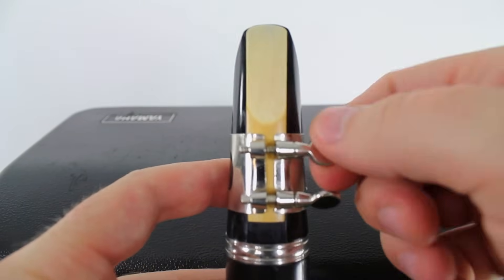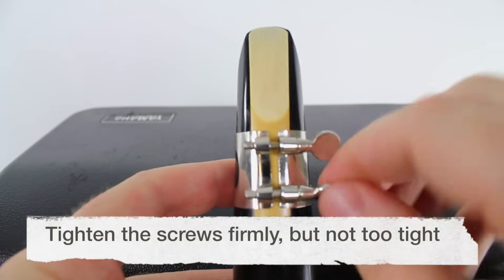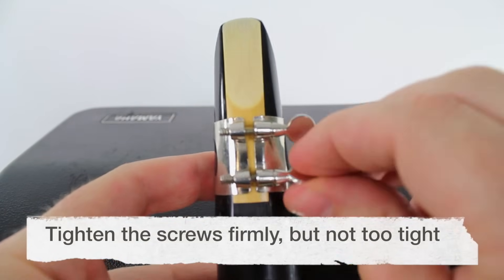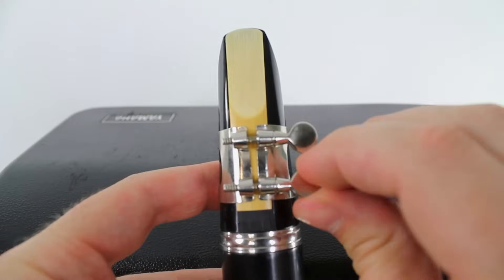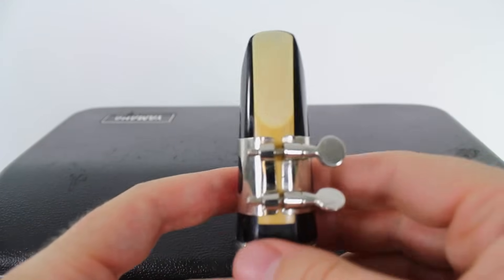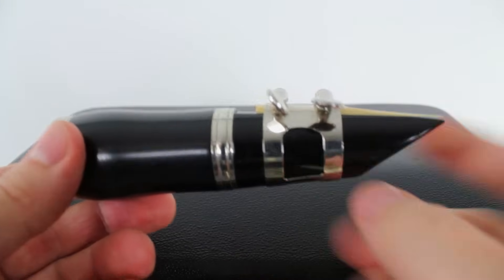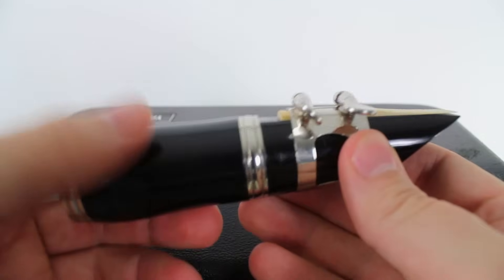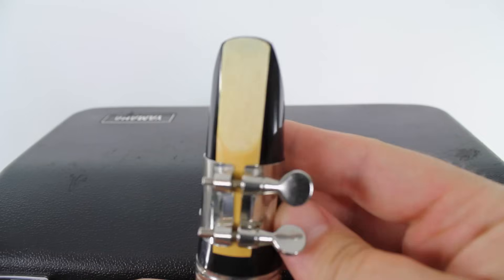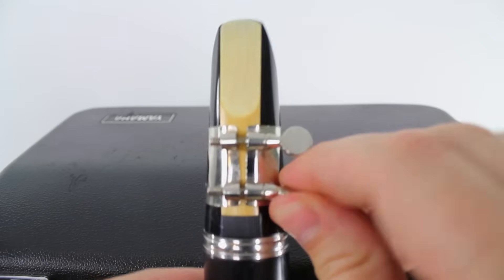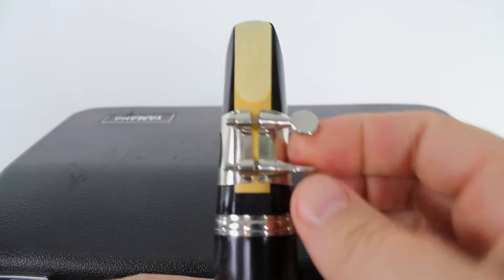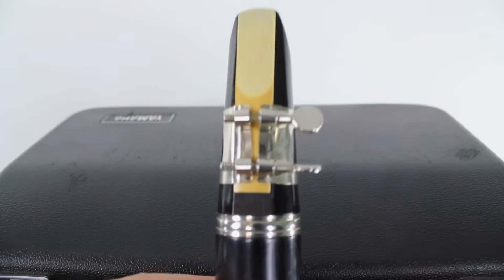Then we're going to tighten the screws. And they don't have to be super, super tight, just tight enough that the ligature won't come sliding off. There we go. That's perfect. So take a look at your reed, mouthpiece, and barrel and just make sure it looks just like mine. You're now ready to make your first sound on your mouthpiece and barrel.